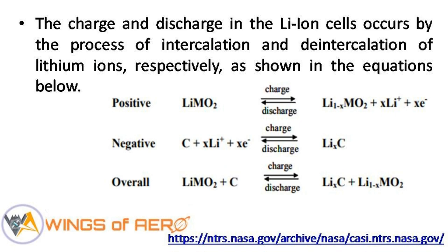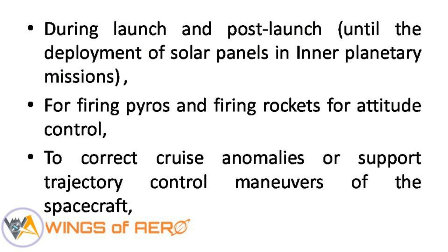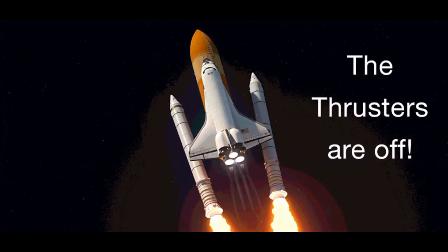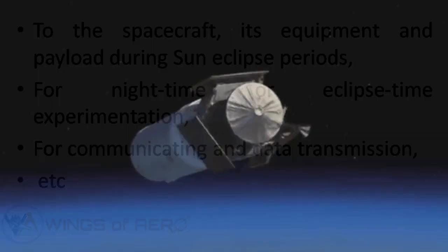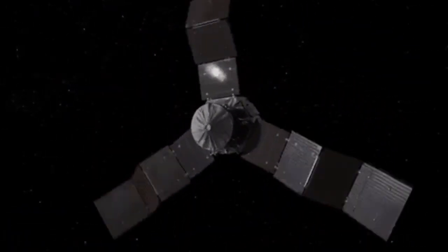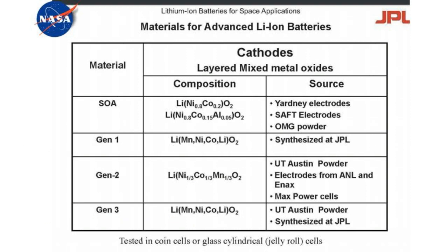These rechargeable batteries are used during launch and post-launch until the deployment of the solar panel. In interplanetary missions, they are used for firing pilots and firing rockets for altitude control, to correct cruise anomalies, or to support trajectory control maneuvers of the spacecraft. They also power the spacecraft equipment and payload during sun eclipse periods, for nighttime or eclipse time experimentation, for communication, and data transmission.